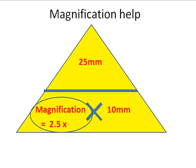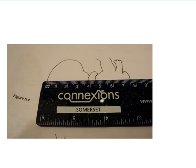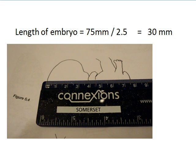Now you've got to be quite sensible about these things. What is the actual size of the embryo? We know that this is a magnification, so we know that the embryo is going to be smaller. We measure it at 75mm. So it's going to be 75mm divided by 2.5, because we want a smaller value. And that would equal — the embryo actual length is 30mm.